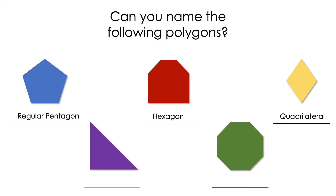The next one, the purple, it's a triangle, but not all the sides are congruent, so that one is just a triangle. And the last one — counting 1, 2, 3, 4, 5, 6, 7, 8 — it's a shape with all the sides congruent and all the angles congruent. That one is a regular octagon.